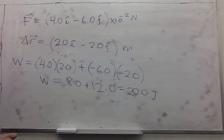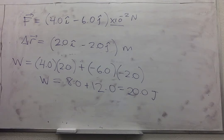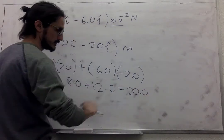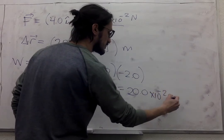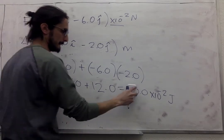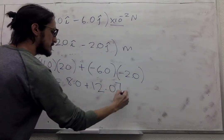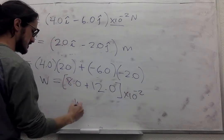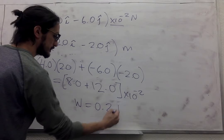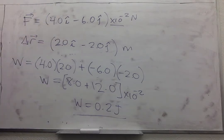So the work done is 20 joules. Except that we have these times 10 to the negative 2. So that is 0.2. Actually I should have that there. And yeah, that's more appropriate for a bug, it's not going to have a lot of force to move.